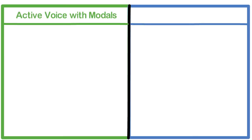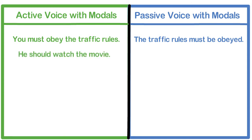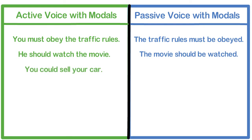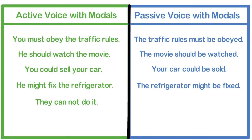Now let's have some more examples. Active voice with modals → passive voice with modals: 'You must obey the traffic rules' → 'The traffic rules must be obeyed.' 'He should watch the movie' → 'The movie should be watched.' 'You could sell your car' → 'Your car could be sold.' 'He might fix the refrigerator' → 'The refrigerator might be fixed.' 'They cannot do it' → 'It can't be done.' 'Will she make a donation?' → 'Will a donation be made by her?'